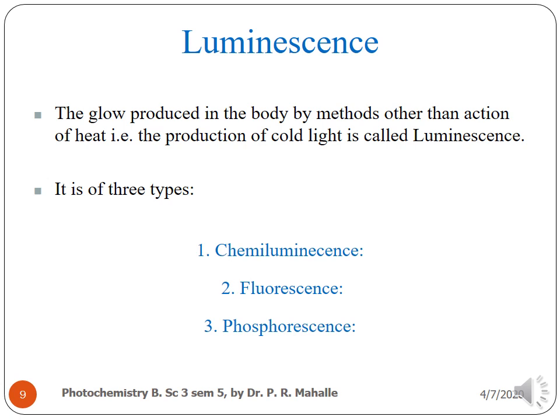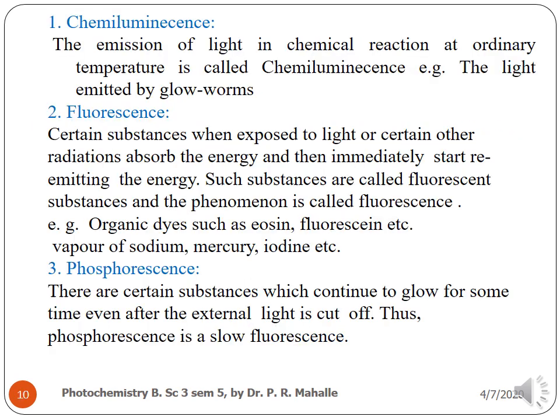The three types are: 1. Chemiluminescence, 2. Fluorescence, 3. Phosphorescence. Chemiluminescence is the emission of light in a chemical reaction at ordinary temperature. An example is the light emitted by glow worms.